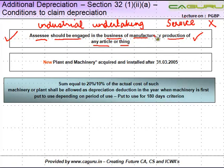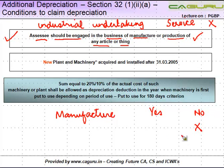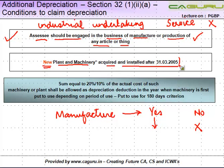Once you are an SSE engaged in the business of manufacture or production of any article or thing — the first condition is: manufacture, yes or no? If it is no, there is no additional depreciation. Once you are into manufacturing, the second condition is: new plant and machinery acquired and installed after 31st March 2005.